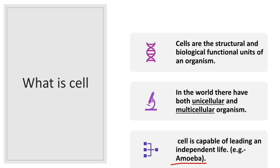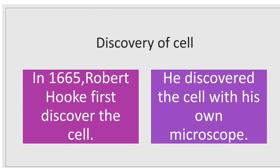I will explain it with an example — amoeba. If we see the structure of an amoeba, we can find only one cell. We all know that for sustaining life, a lot of functions like respiration, excretion, and processing nutrition are necessary. In amoeba, all these functions are done by only one cell.